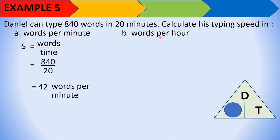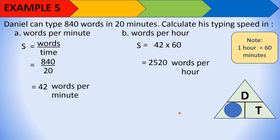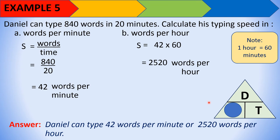For (B) words per hour: since 1 hour equals 60 minutes, multiply 42 by 60. Speed in words per hour = 42 × 60 = 2,520 words per hour. So Daniel can type 42 words per minute, or 2,520 words per hour.